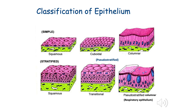There is another type that hangs in the balance between simple and stratified because it will look like it is stratified, and yet you cannot count separate layers because all the cells sit on the basement membrane but not all of them reach the surface. We call such epithelia the pseudostratified columnar epithelia, which is usually found in the respiratory system.